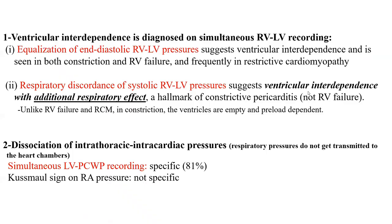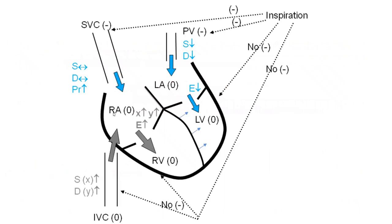So the hallmark is ventricular interdependence with additional respiratory effect — that's how you should formulate it. I see people equating respiratory discordance with ventricular interdependence alone; it really means the full phrase. The second hemodynamic phenomenon is dissociation of intracardiac and intrathoracic pressures. A related but less specific finding is Kussmaul's sign — the RA pressure does not decline with inspiration — which is a manifestation of that dissociation, but it's nonspecific. You see it in RV failure and restrictive cardiomyopathy as well.